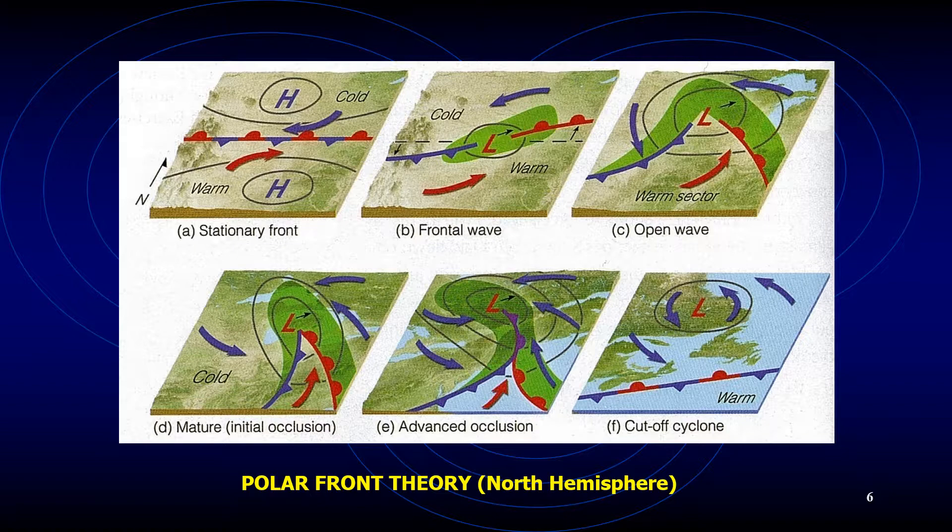In the warm sector, the weather tends to be partly cloudy, though scattered showers may develop if the air is conditionally unstable. Energy for the storm is derived from several sources: warm air rises and cold air sinks, transforming potential energy into kinetic energy. Condensation supplies energy to the system in the form of latent heat, and as surface air converges toward the low center, wind speeds may increase, producing a further increase in kinetic energy.